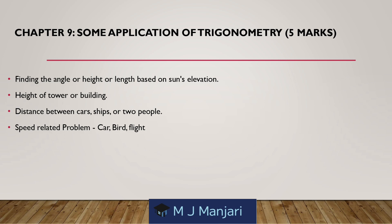Chapter 9: Some Applications of Trigonometry — 5 marks. Topics: finding the angle and height or length based on sun elevation; height of a tower or building; distance between cars, ships or two people; and speed-related problems involving cars, birds or flights.